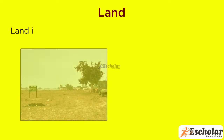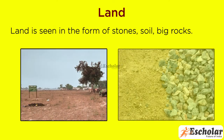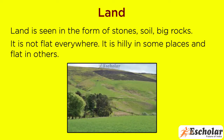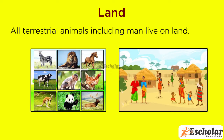Land is seen in the form of stones, soil, and big rocks. It is not flat everywhere — it is hilly in some places and flat in others. All terrestrial animals, including man, live on land.